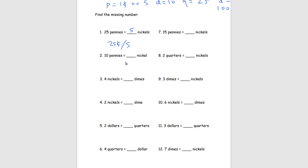For number 2, we have 10 pennies which is 10 cents. Since nickels are 5 cents, we divide by 5 again and get 2. So 10 pennies equals 2 nickels. Moving over, we have 15 pennies of nickels again — 15 cents divided by 5 gets us 3. So 15 pennies equals 3 nickels.